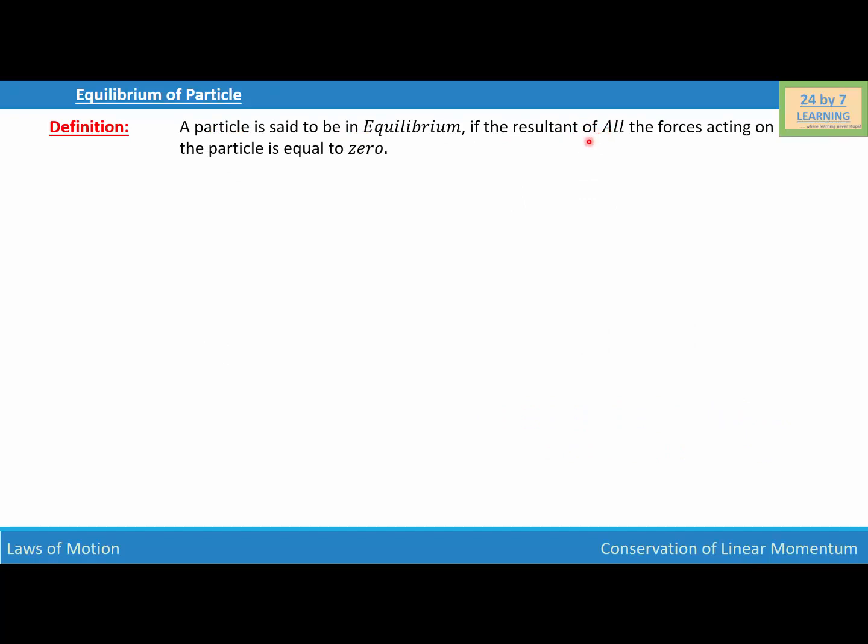In other words, if we have a particle and the sum of all the forces acting on that particle is zero, then that particle is in equilibrium because there is no resultant force and the particle is not moving.